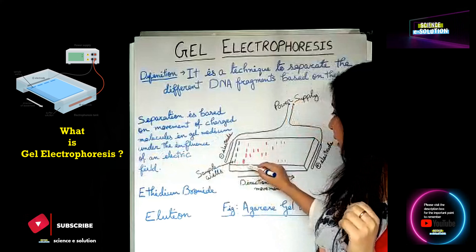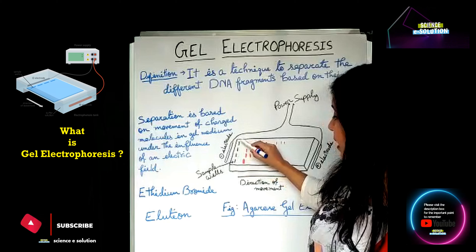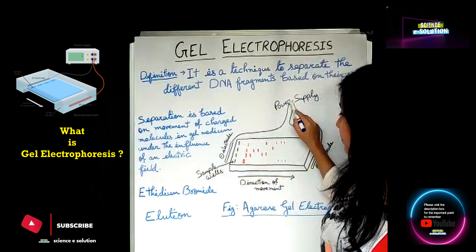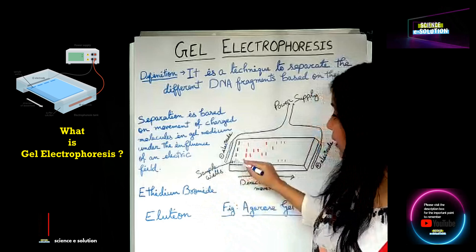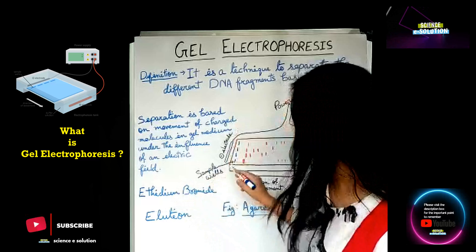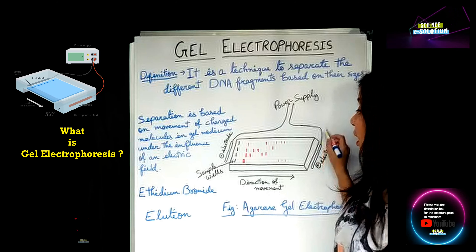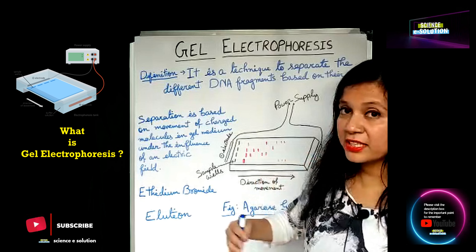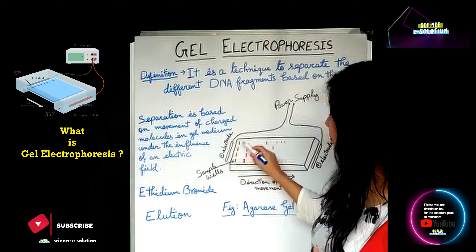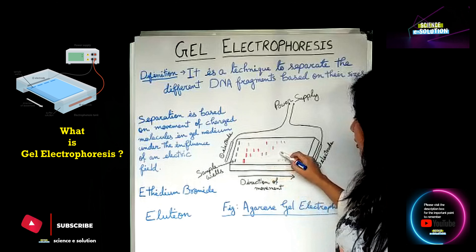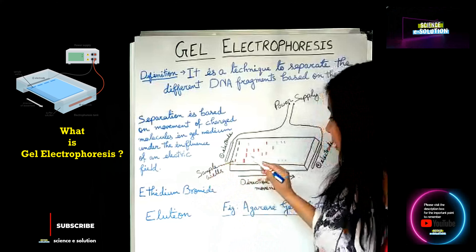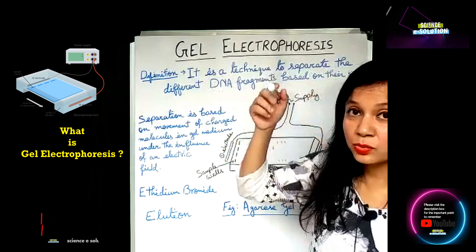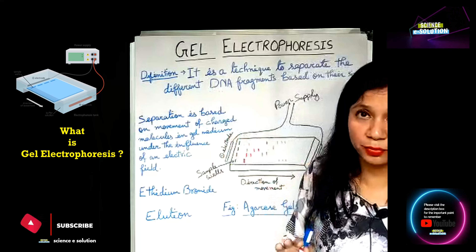The tray also contains agarose gel. Now, the DNA molecules are negatively charged, so we pour them near the negative electrode side, and they will have a tendency to move towards the positive electrode — that is, the anode. As soon as we switch off the power supply, the DNA stops moving.